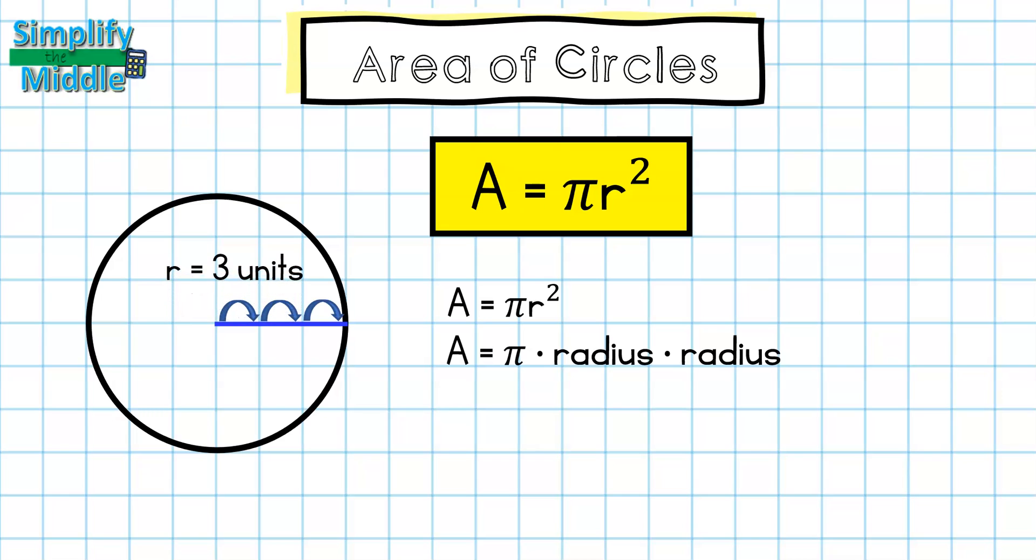Now I'm ready to substitute in my formula. So I'm going to be using 3.14 as an approximation for pi. So I have area equals 3.14 times 3 times 3 because I will be writing my radius twice. And my last step is to multiply.